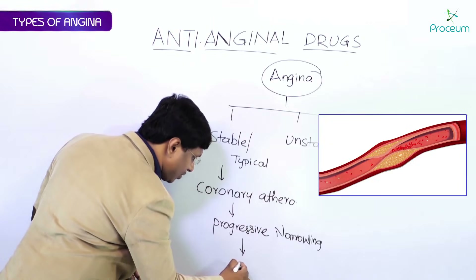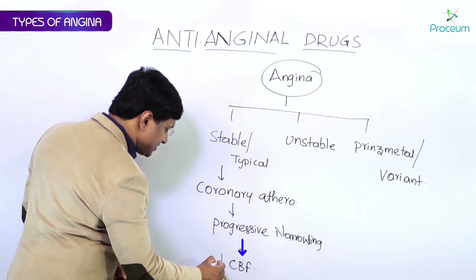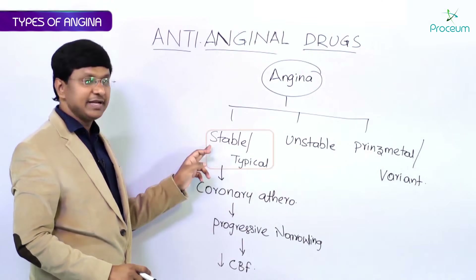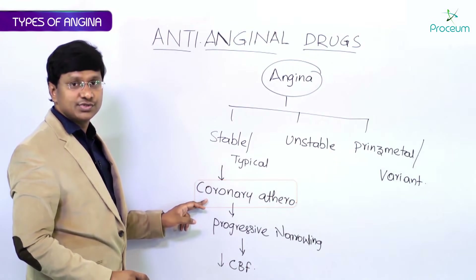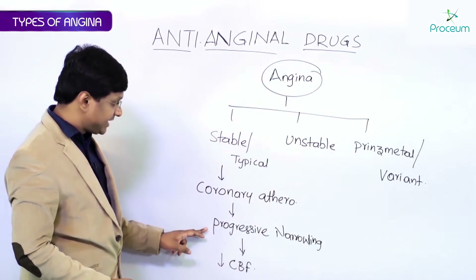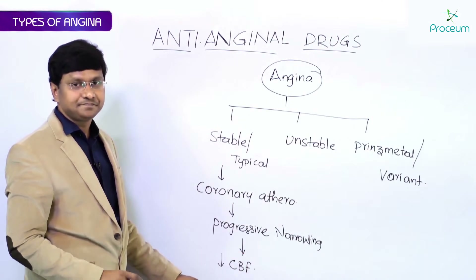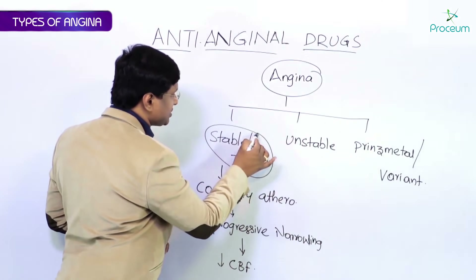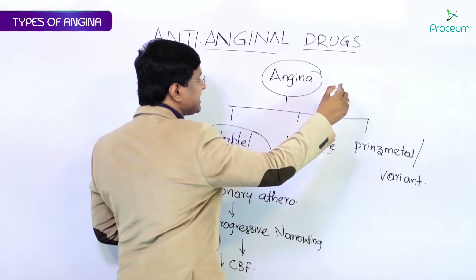Whenever there is progressive narrowing of the blood vessel wall, this will decrease the coronary blood supply or coronary blood flow. So in stable angina, the basic pathogenesis is coronary atherosclerosis, leading to progressive narrowing of the blood vessel and thereby decreased coronary blood flow.